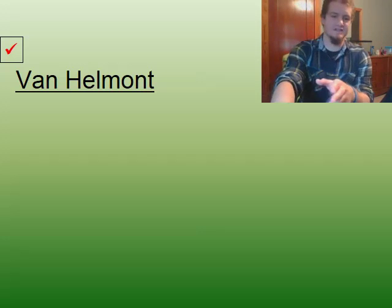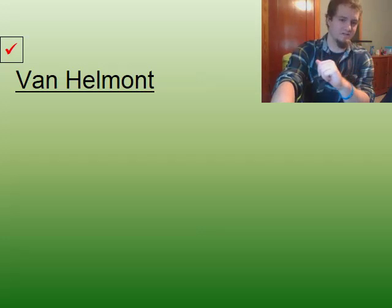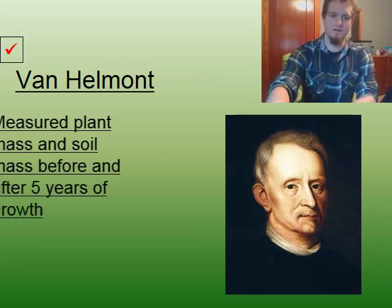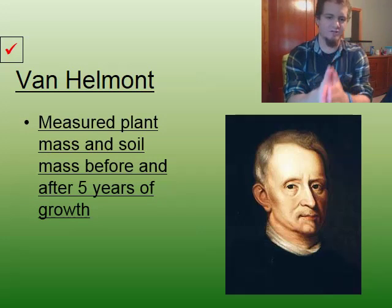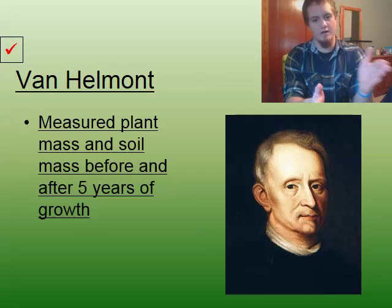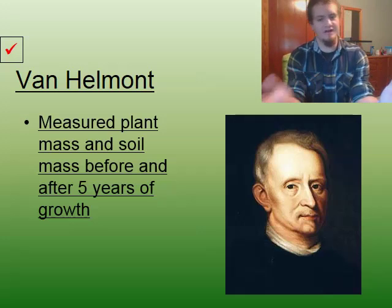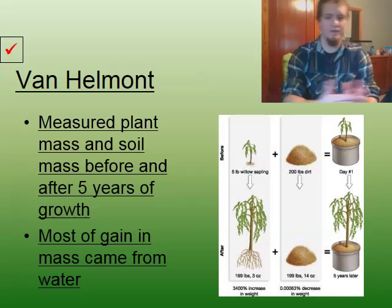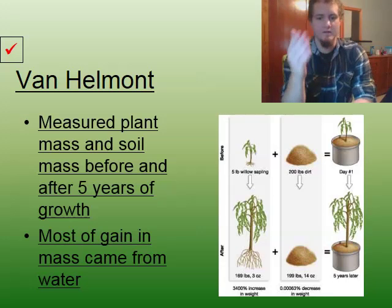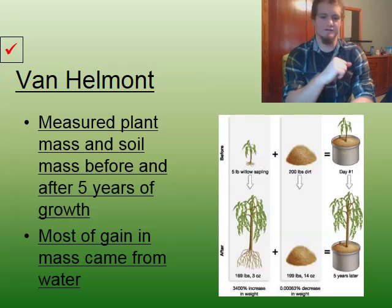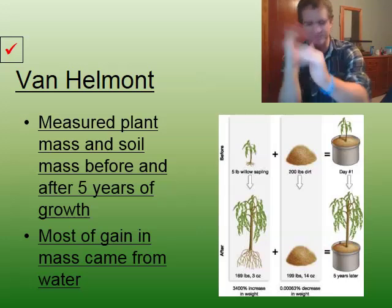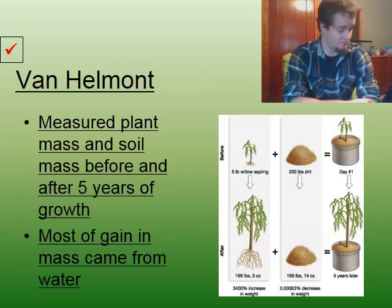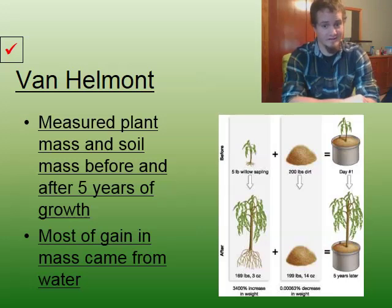Now we need to discuss a few scientists who helped with the discovery of photosynthesis. The first is Van Helmont. He did an experiment where he measured the mass of a plant and the mass of the soil he put it in before and after five years of growth. He had a five-pound willow sapling and 200 pounds of dirt, weighed them out, put them in a pot, and took care of this plant for five years.